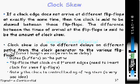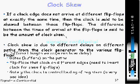If a clock edge does not arrive at different flip-flops at exactly the same time, then the clock is said to be skewed between these flip-flops. The difference between the arrival times at each flip-flop is called the amount of clock skew. If the clock is arriving at the source and destination flop at different times, we say the clock is skewed between those two flops.